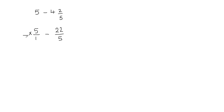If I multiply this denominator by 5, then 5 times 1 gives me 5 and I'll get the same denominators. But if I multiply the denominator by 5, I also have to multiply the numerator by 5 to balance the fraction. So 5 divided by 5 is just 1 — this is a fancy form of writing 1, and 1 times 5 over 1 is still 5, so I haven't changed anything.